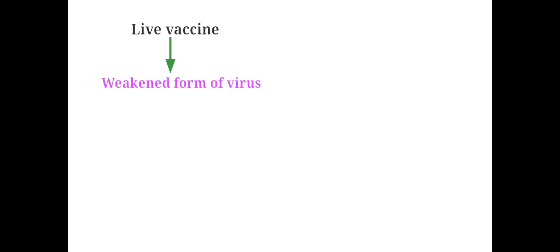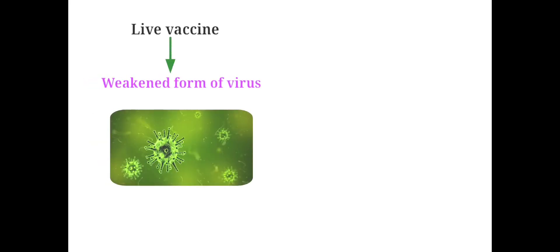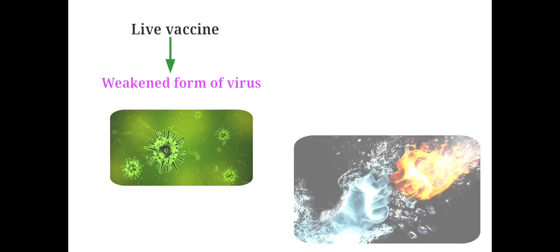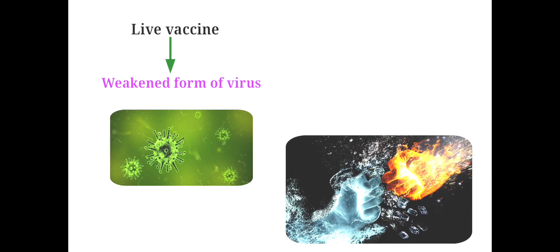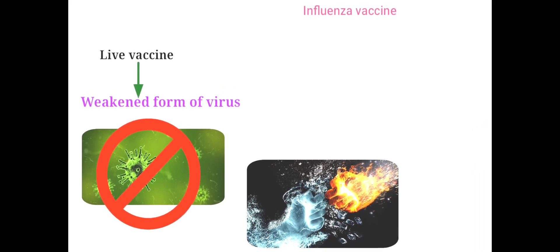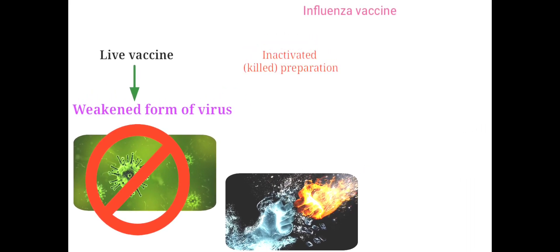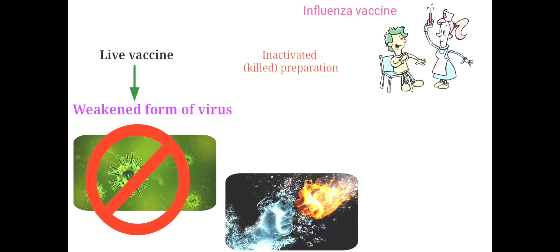Live vaccines use a weakened or attenuated form of the germ that causes a disease. Live vaccines are so similar to the natural infection that they help prevent. They create a strong and long-lasting immune response. Just one or two doses of most live vaccines can give you a lifetime of protection. Two types of influenza vaccine are available: a killed vaccine given as an injection, and a live vaccine given nasally.